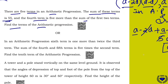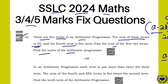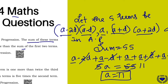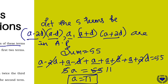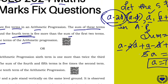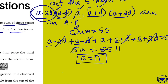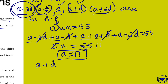The 4th term is A plus D. The 4th term is 5 more than the sum of the first 2 terms. The first term is A minus 2D and the second term is A minus D, so their sum is 2A minus 3D.